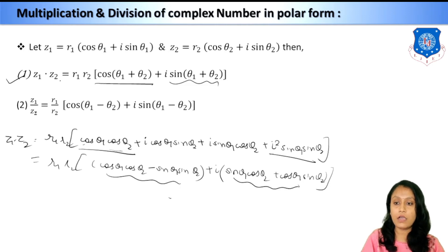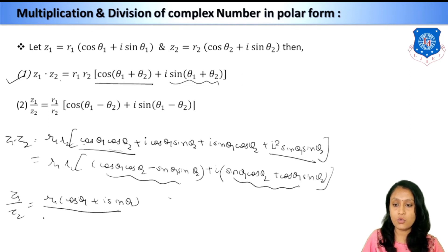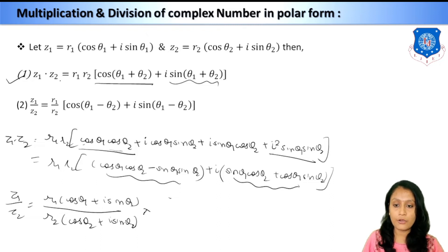Now for z₁/z₂: z₁ = r₁(cos θ₁ + i sin θ₁) divided by z₂ = r₂(cos θ₂ + i sin θ₂). Since we have a complex number in the denominator, we multiply and divide by the conjugate (cos θ₂ − i sin θ₂).